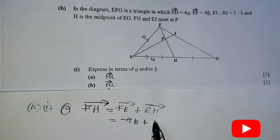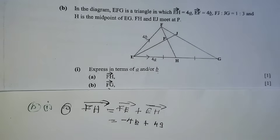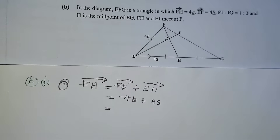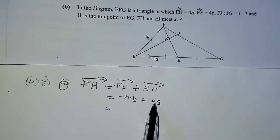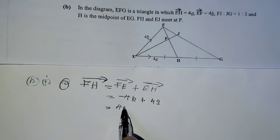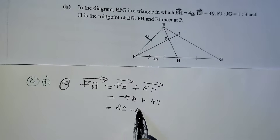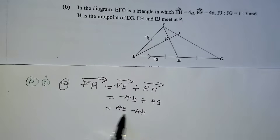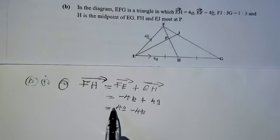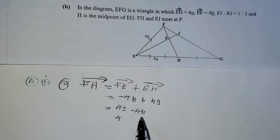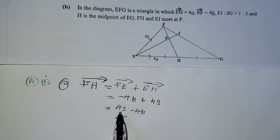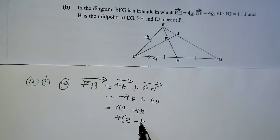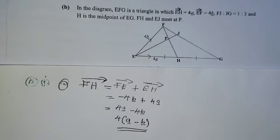I'm not going to change the sign. We're going to write 4 vector a together. According to the rule of vectors, we always start with the positive one. So I'm going to start with 4 vector a, giving us 4 vector a minus 4 vector b. So this is the answer. You can factorize — the common factor is 4 — giving 4 times (vector a minus vector b). This is your answer.